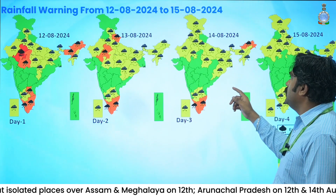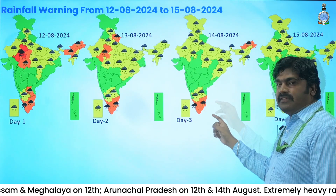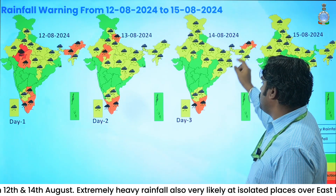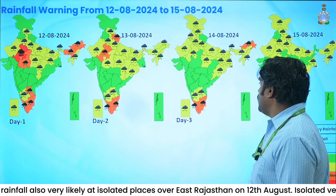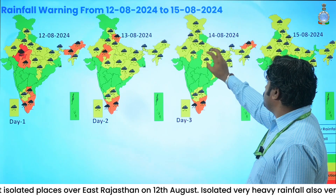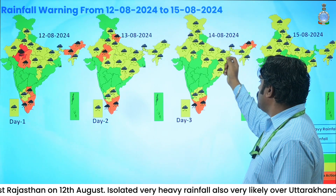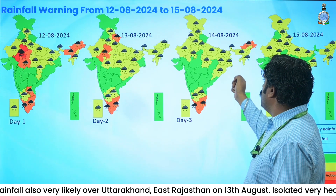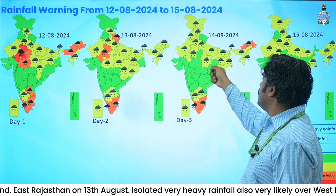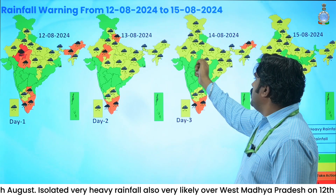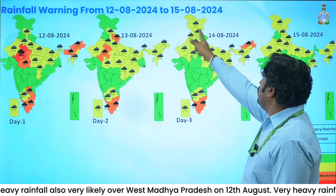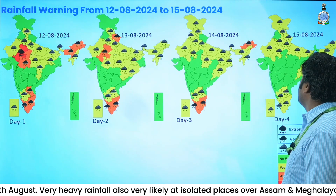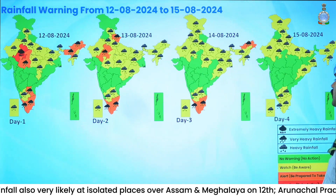For 14th August, Day 3 forecast: very heavy rainfall warnings have been issued over Kerala, Tamil Nadu, and Arunachal Pradesh with orange warning. Heavy rainfall warnings shown in yellow cover south interior Karnataka, Rayalaseema, Odisha, Bihar, West Bengal, east Madhya Pradesh, Uttar Pradesh, both Rajasthan, Jammu and Kashmir, Punjab, Haryana, and the Delhi region. This is the Day 4 forecast.